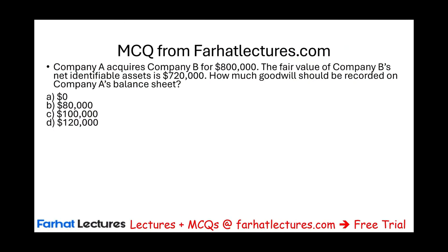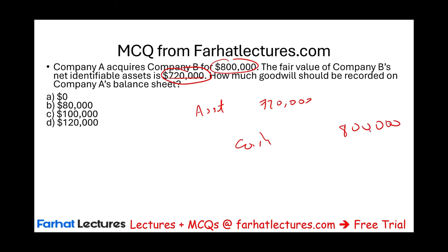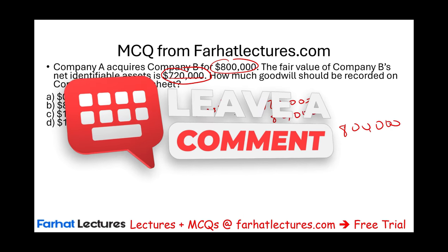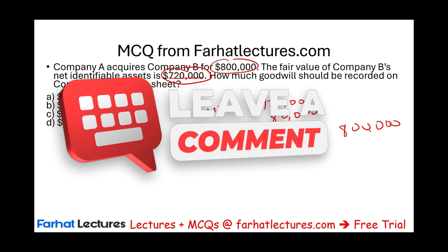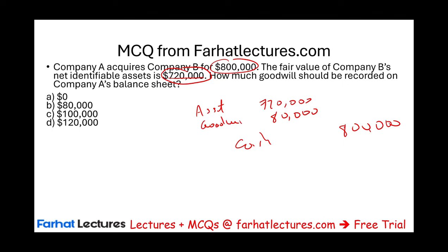Let's look at a multiple choice question from farhatlectures.com. Company A acquired Company B for $800,000. The fair value of Company B's net identifiable assets is $720,000. How much goodwill should be recorded on Company A's balance sheet? They purchased all assets and liabilities at fair value — the difference is $720,000. They paid cash of $800,000. The difference is a debit to an asset they cannot identify, so goodwill equals $80,000.